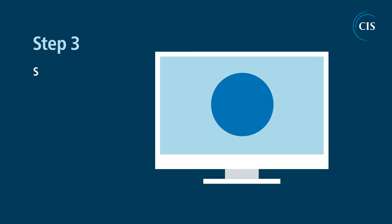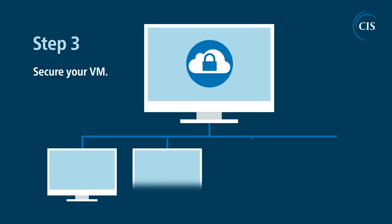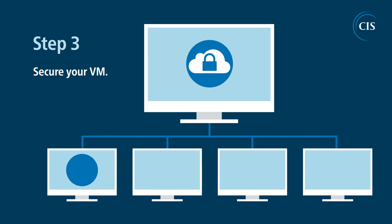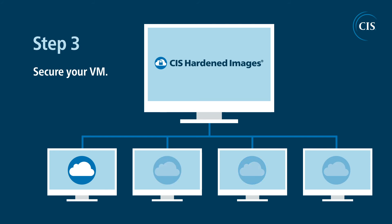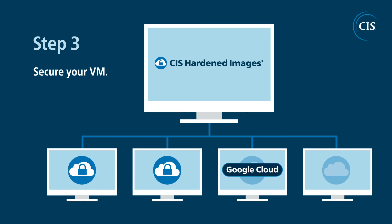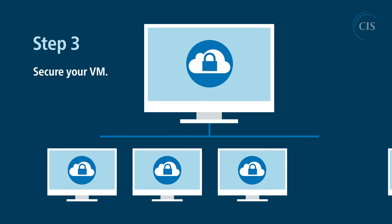Step 3: Secure your VM. CIS hardens virtual machine images. These VMs, known as CIS Hardened Images, are built on base operating systems from AWS, Azure, GCP, and Oracle Cloud Marketplaces.